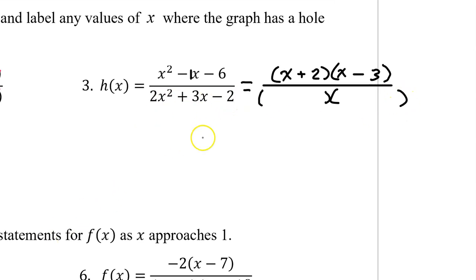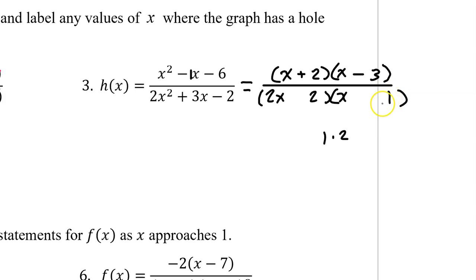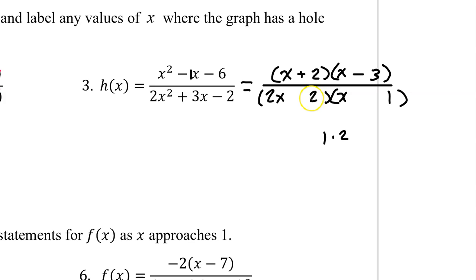On this trinomial, 2x squared will factor as 2x times x. Then we skip over and look at the 2. Two will only factor as 1 times 2, but it matters the order. If there is no GCF in the original problem, there will never be a GCF inside the parentheses either. So that tells me there will not be a 2 right here — I know it has to be 1 times 2 in this order.